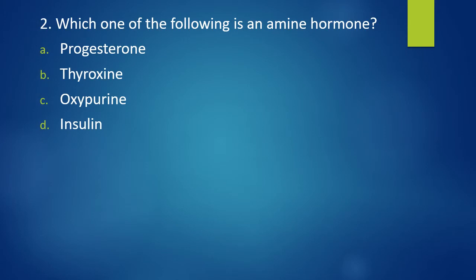Question 2. Which one of the following is an amine hormone? Progesterone, thyroxine, oxypurine, insulin. Amine hormone. Correct answer is option B. Thyroxine is an example of amine hormone.